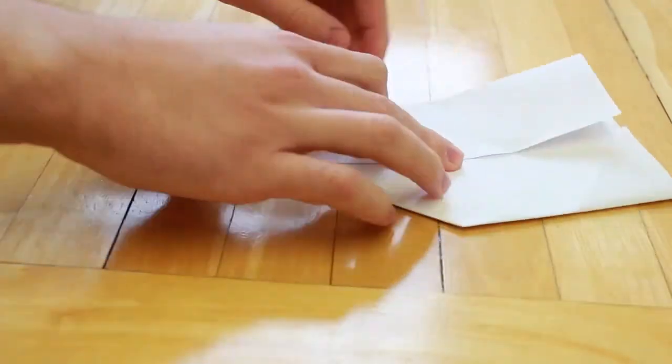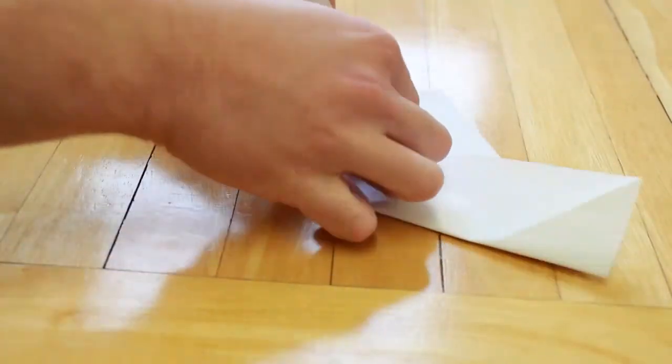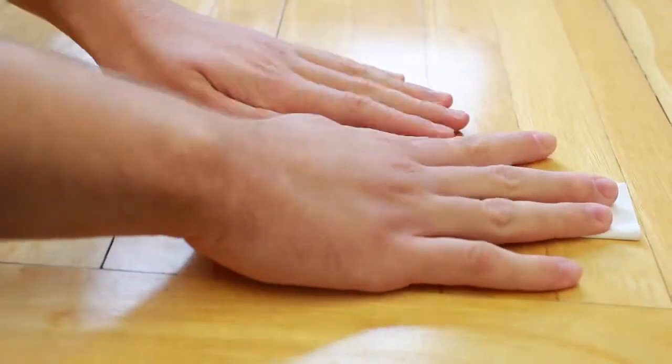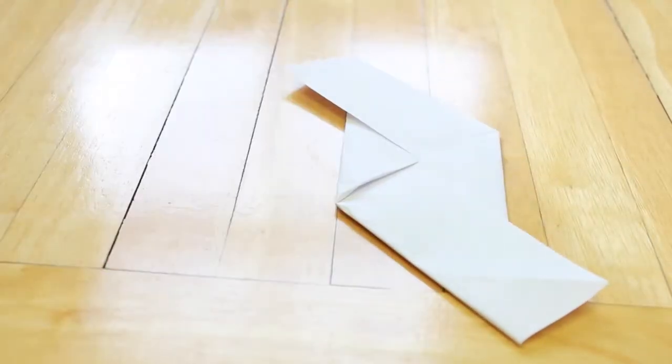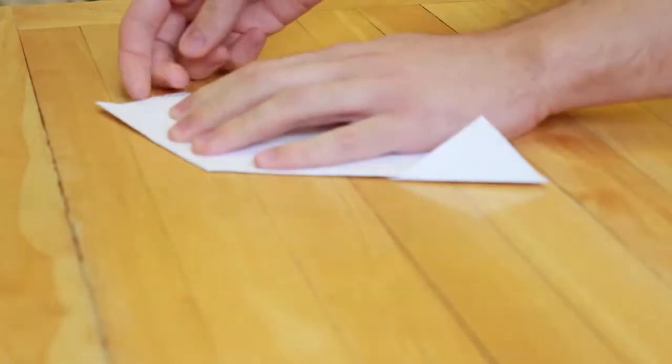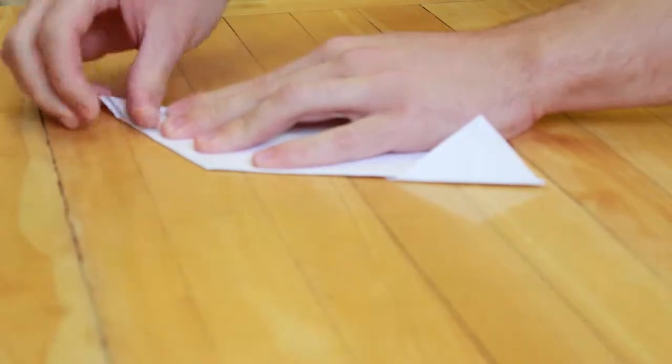Now fold over both triangles to create the base of the shape, then flip over the piece of paper. Now fold over both triangle flaps to create one solid shape, then flip over.